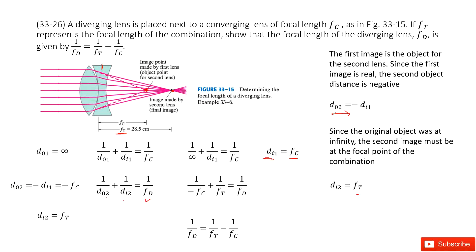We know that Do2 equal to negative Di1, as we talked about there. Because this first image is object for the second lens.